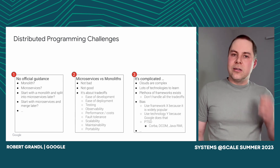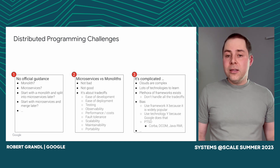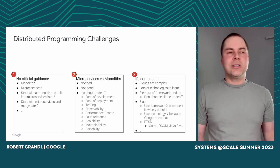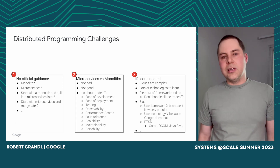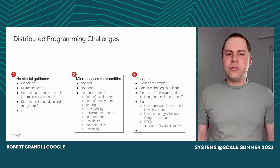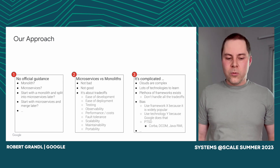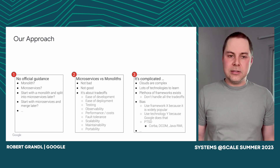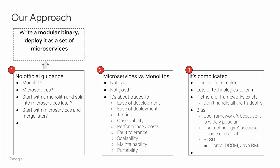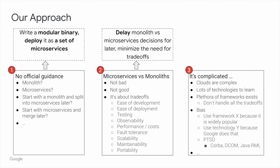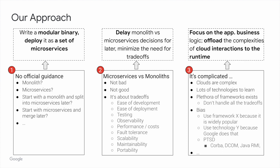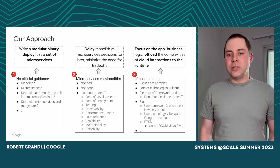Third, writing applications is complicated because the whole ecosystem is complicated. Clouds are complex, there are lots of technologies to learn, and many frameworks try to address some of these challenges but don't handle all the trade-offs. We are also biased — we choose frameworks based on popularity or avoid them because they remind us of something we hated in the past. Based on these three key findings, we came up with three ideas: write a modular binary and deploy it as a set of microservices, delay the monolith versus microservices decision, and have the developer focus on business logic while offloading cloud complexity to the runtime.